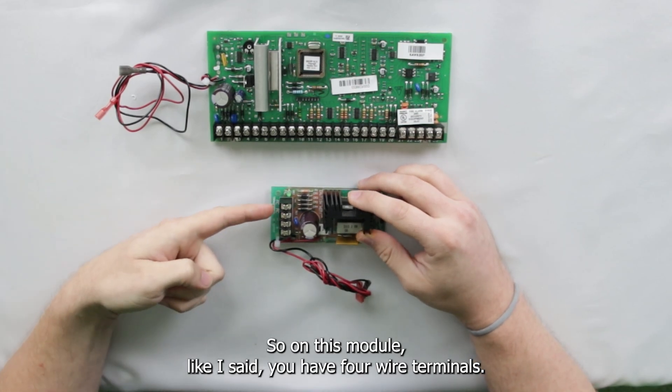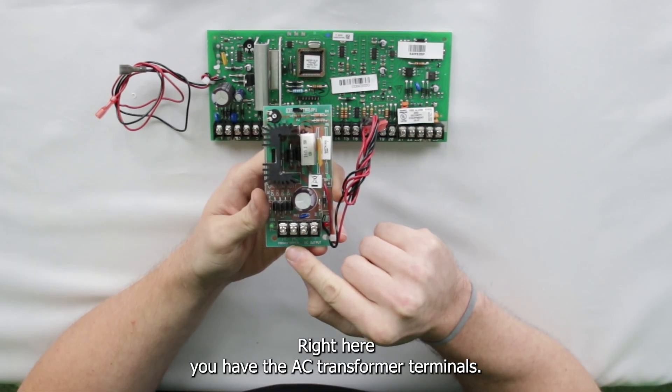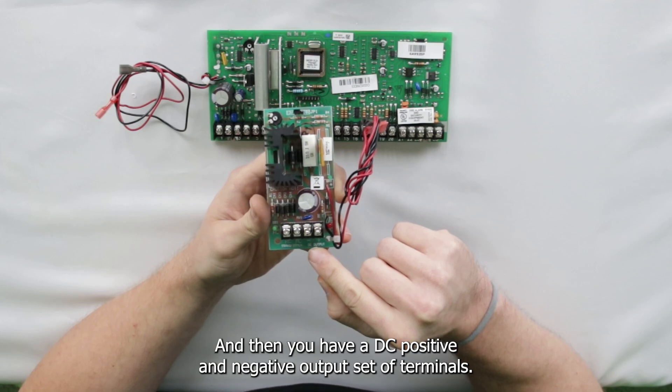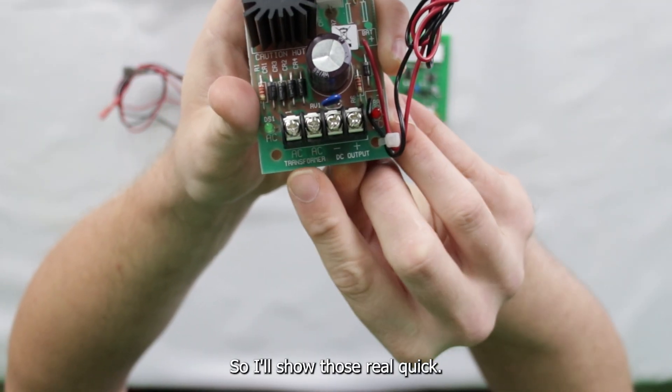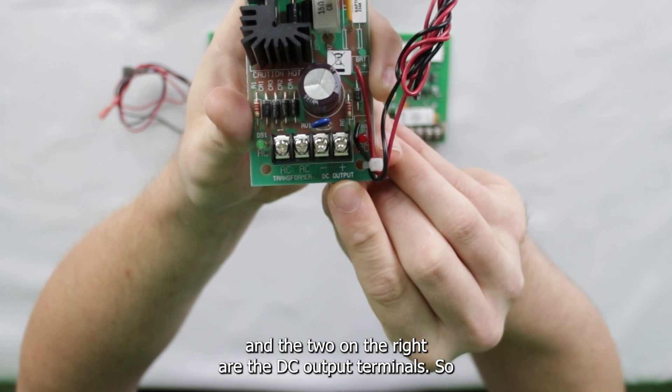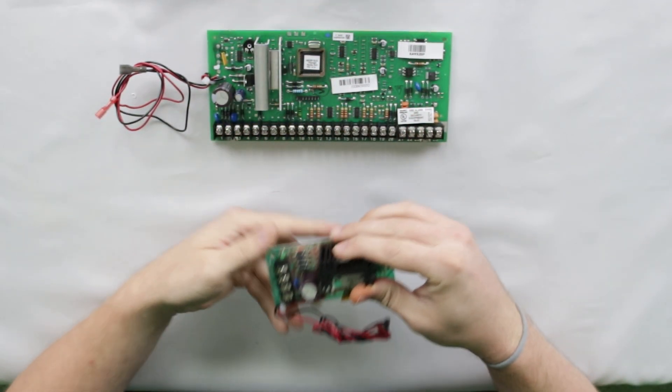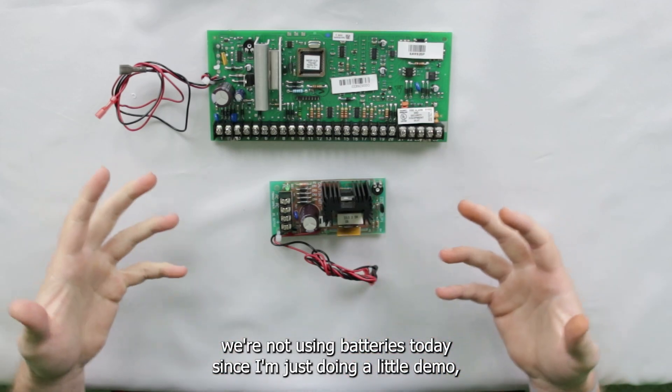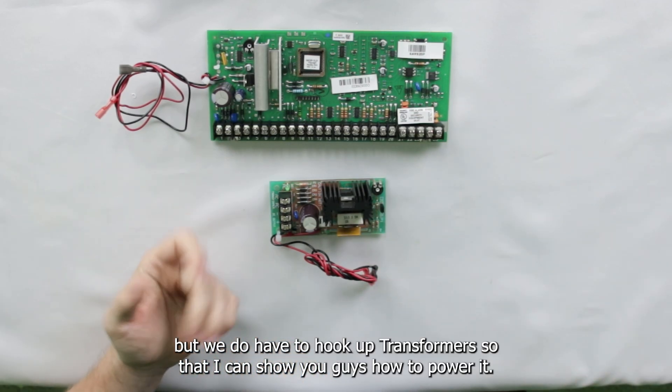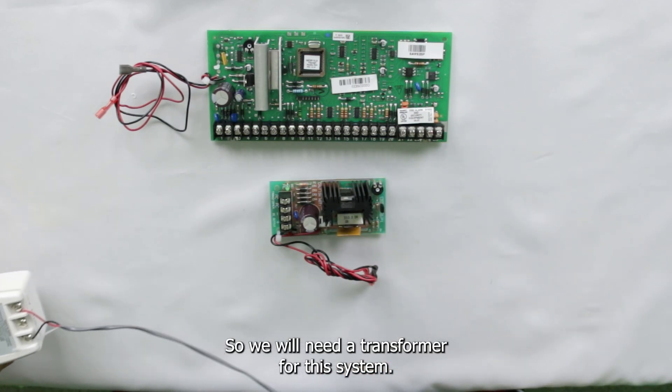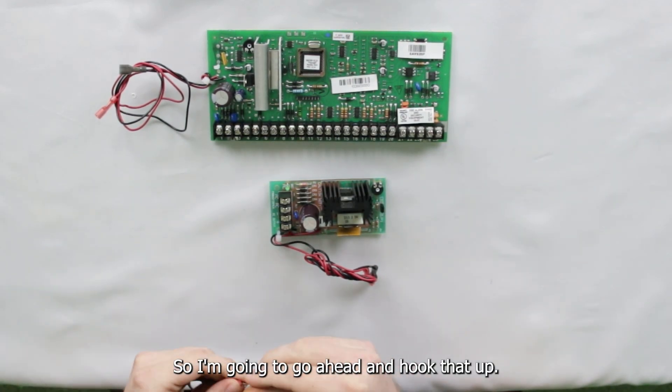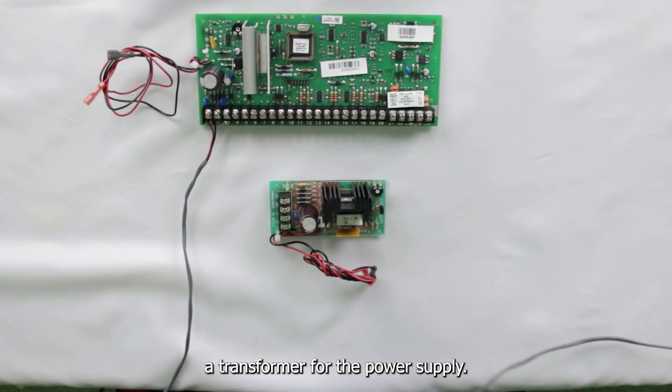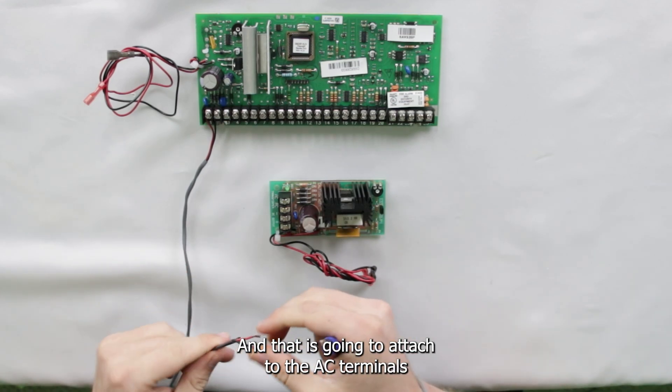So on this module, you have four wire terminals. Right here, you have the AC transformer terminals, and then you have a DC positive and negative output set of terminals. So the two on the left are the AC terminals, and the two on the right are the DC output terminals. As I mentioned, you will need a transformer and a battery with this. We're not using batteries today since I'm just doing a little demo, but we do have to hook up transformers so that I can show you guys how to power it. So we will need a transformer for the system, and then we will also need a transformer for the power supply that is going to attach to the AC terminals here.